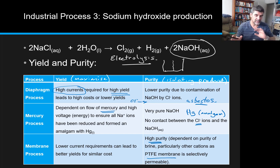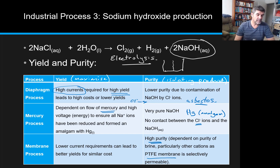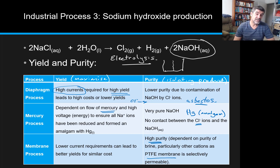Obviously there are other ions that are there and we want to make sure that we're selecting against those, so we don't have a combination of substances that will affect our purity. And also, this one seriously reduced the costs, which meant that we were able to increase our yield.